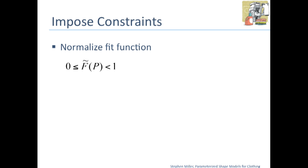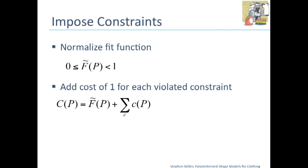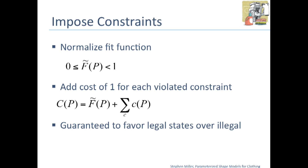We impose constraints on the cost function itself. We first normalize the fit function so it goes from 0 to 1. Then for every violated constraint, we add a cost of 1. The net effect is that we're guaranteed to always favor any legal state over any illegal state. If it's a legal state, it will have a cost less than 1; if it's illegal, no matter how well it fits, it will have a cost of greater than 1.